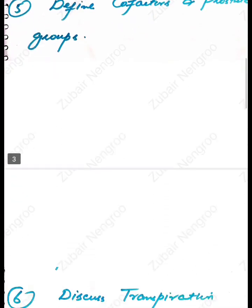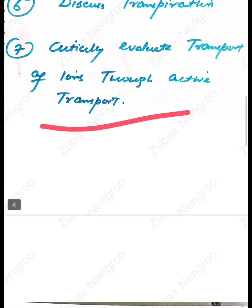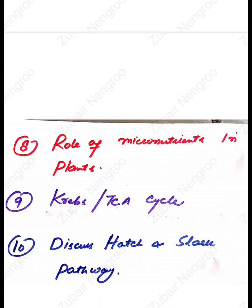The sixth question is: discuss transpiration — what is transpiration? Along with it, guttation can also come, so look at that too. The seventh question is: critically evaluate the transport of ions through active transport. The eighth question is the role of micronutrients in plants.